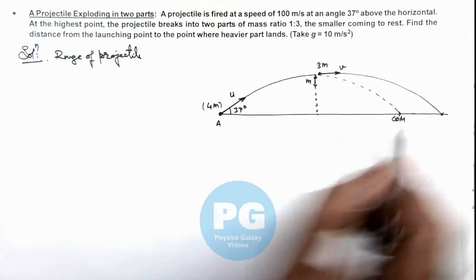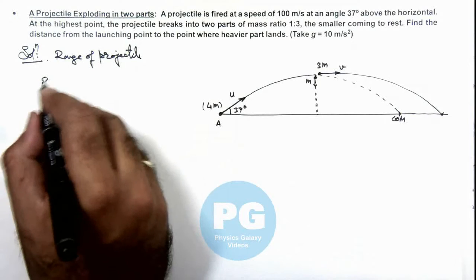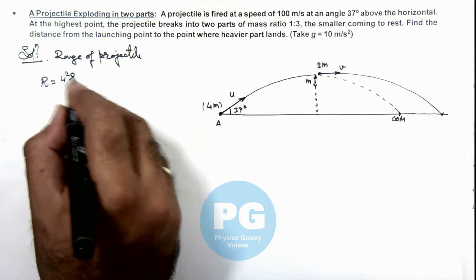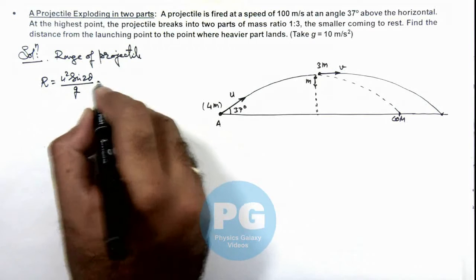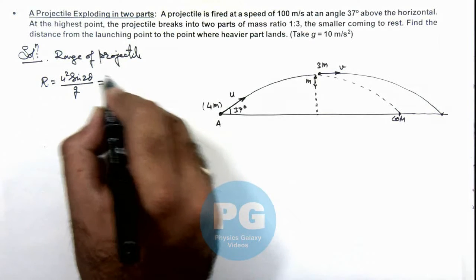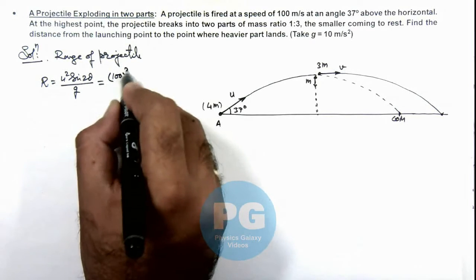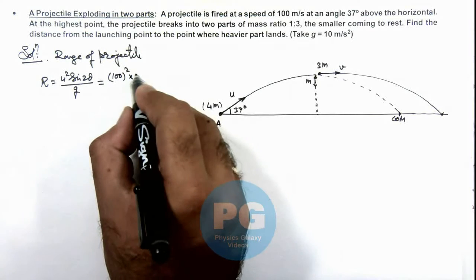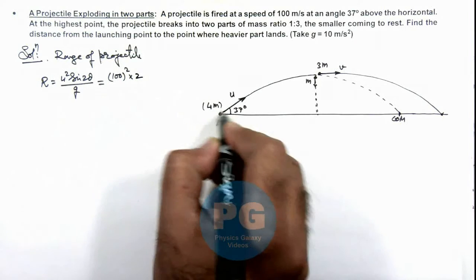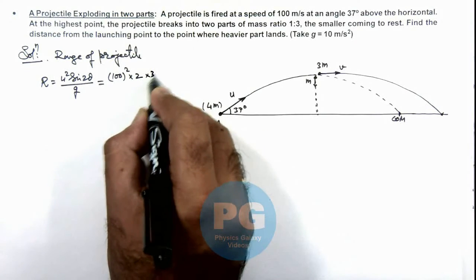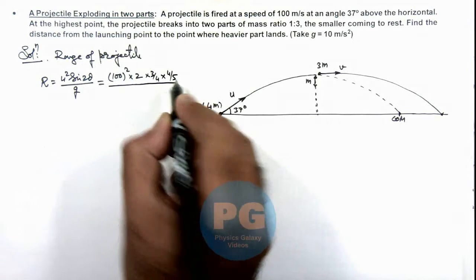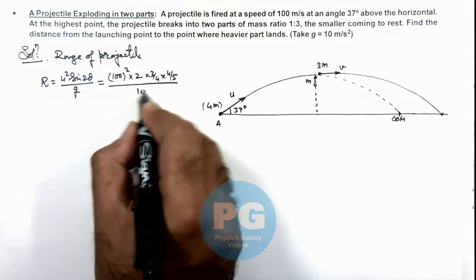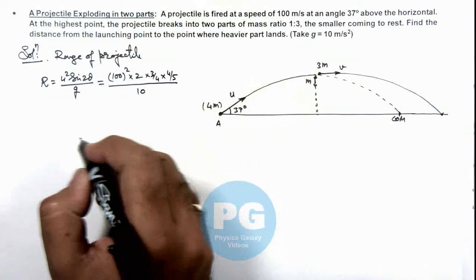Where the center of mass will land can be given as R which is u² sin(2θ) divided by g. That is equal to u² is 100² multiplied by sine 2θ we can write as 2 sine 37 is 3/5 and cos 37 is 4/5, divided by g we can take as 10 meter per second square which is given here.